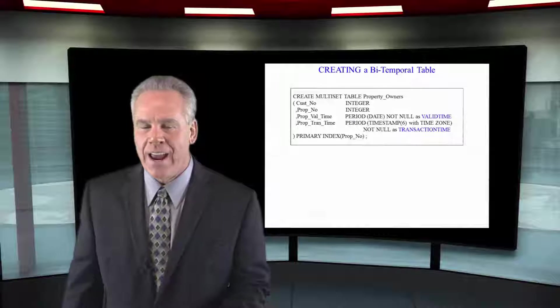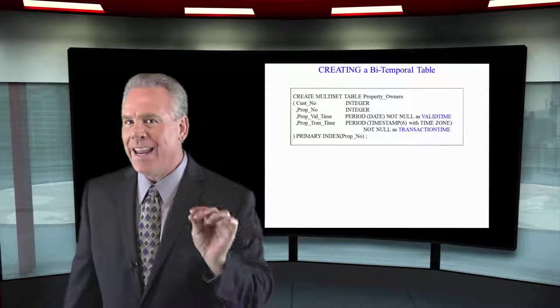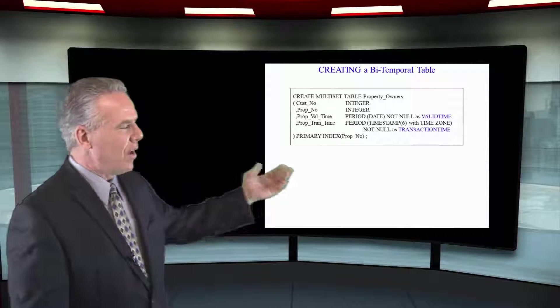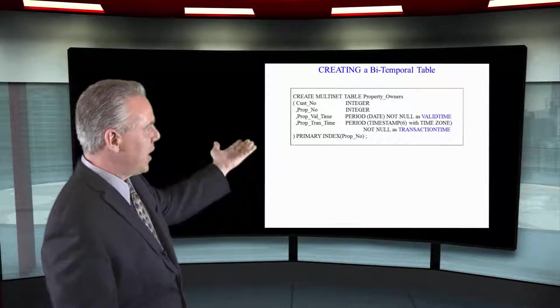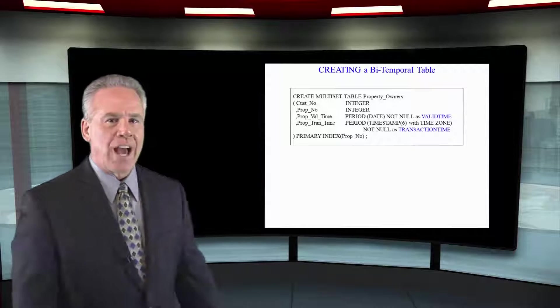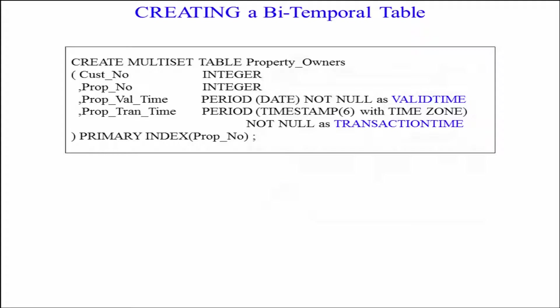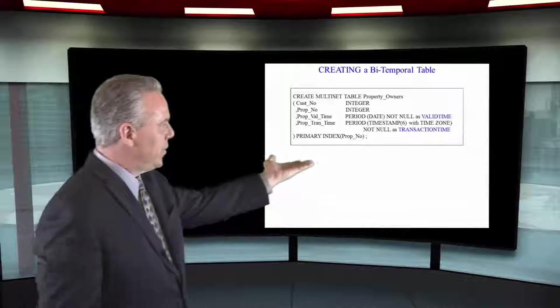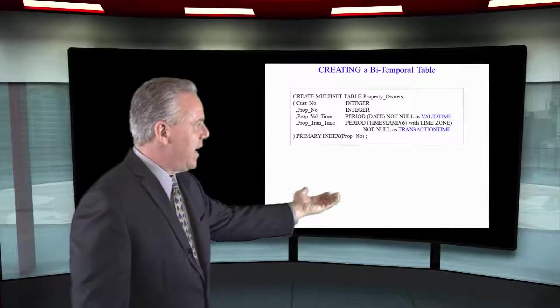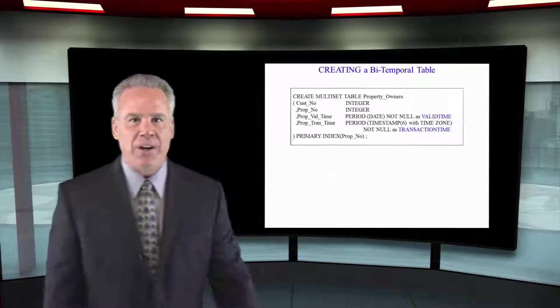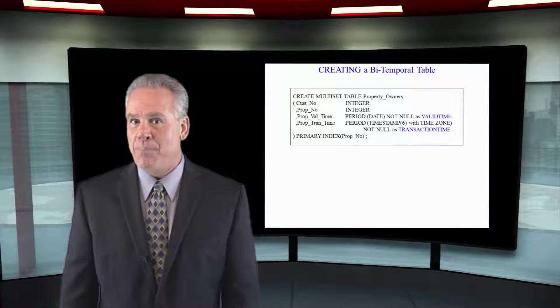What I want you to focus on right now are the keyword aliases. As I've said here, I've created this table, it's got four columns. Notice column three is defined as valid time. Not often you see a table create statement where you're giving the column an alias. When it sees AS VALID TIME and AS TRANSACTION TIME, Teradata says that's a bi-temporal table.